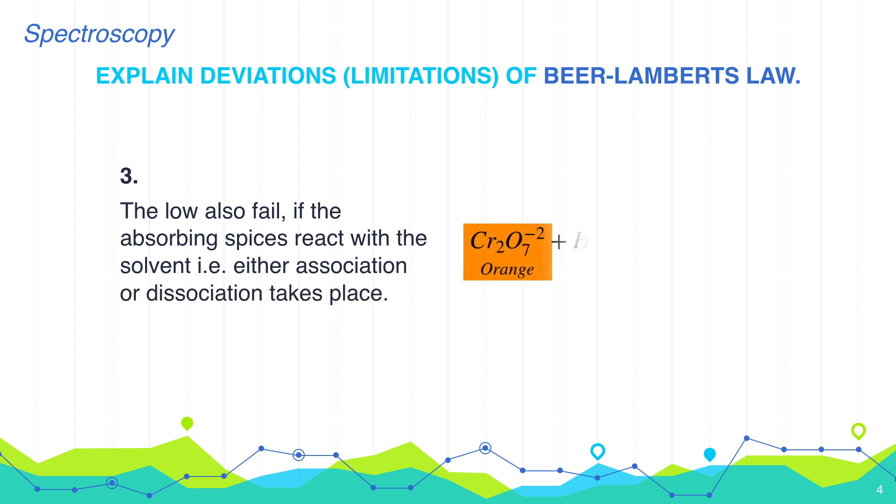For example, change in color of dichromate ions on dilution with water. If dichromate ions are diluted at constant pH, then the graph is straight-lined, means it obeys Beer-Lambert's law. But if the dilution is done not by keeping the constant pH, dichromate ions react with water molecules producing chromate ions, which is yellow in color.